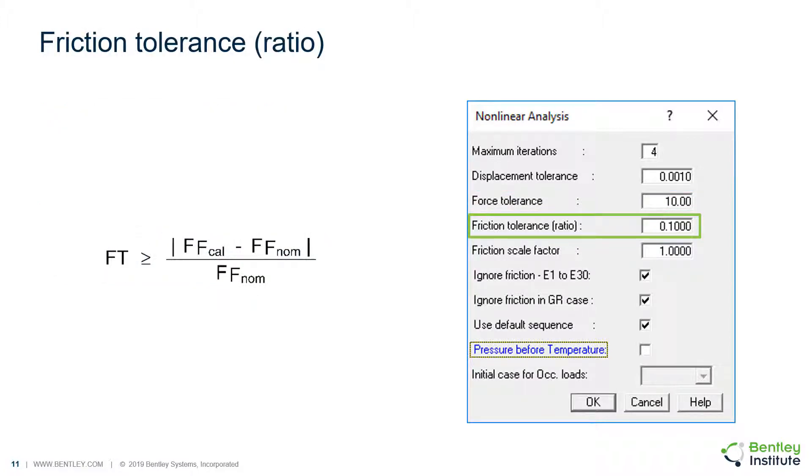The friction tolerance, FT, is used to check analysis convergence. The nominal friction force value, FFNOM, is the bearing spring force multiplied by the friction coefficient. If the calculated friction force value, FFcal, is within the specified ratio of the nominal value for all supports, the analysis is assumed to have converged.